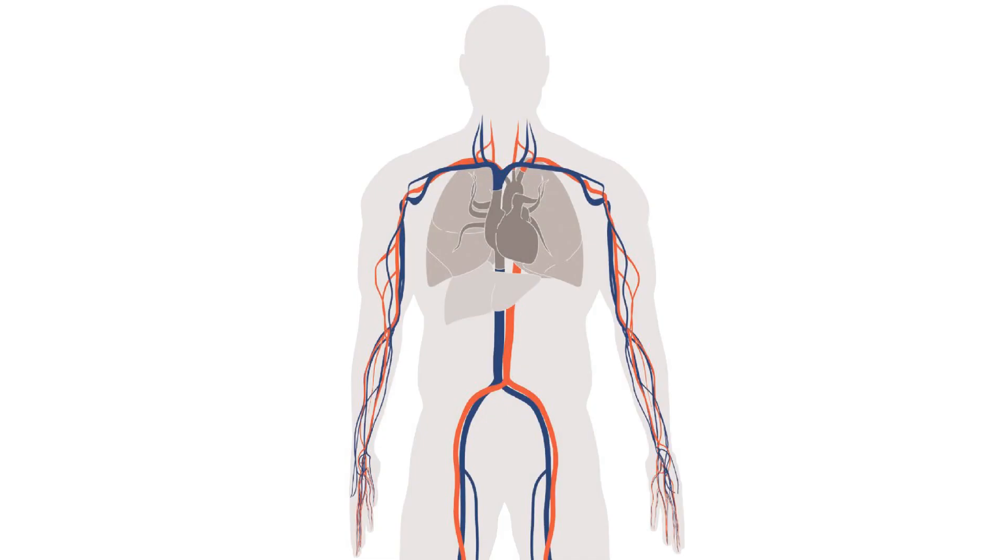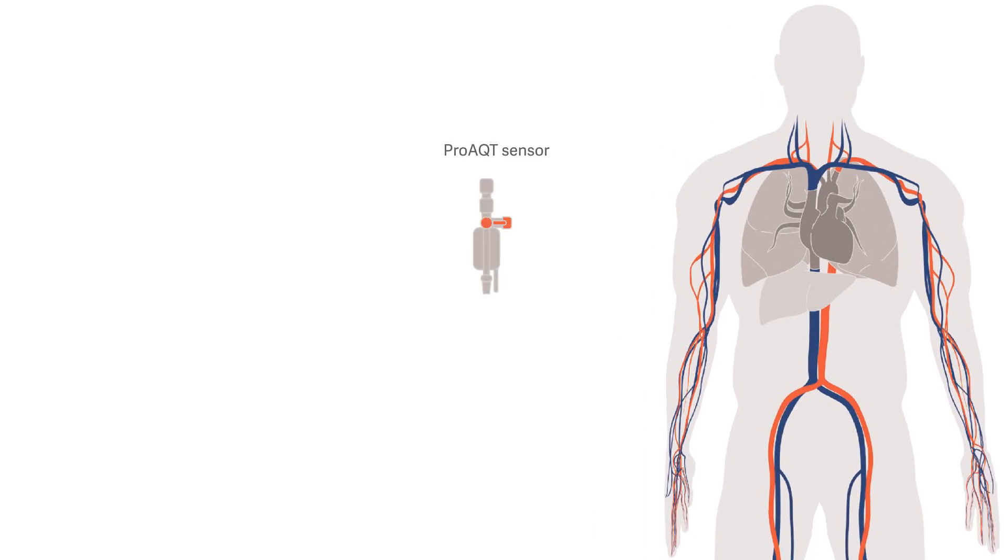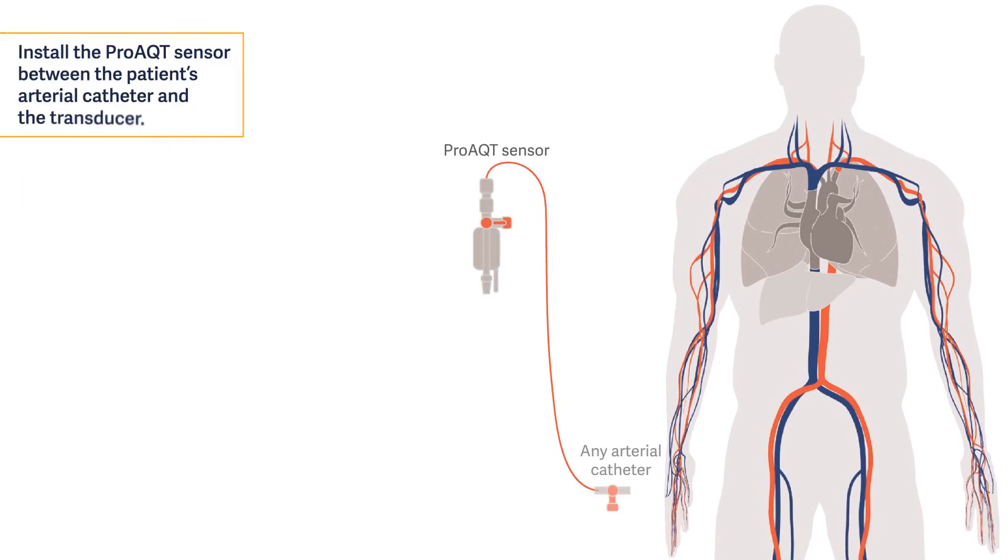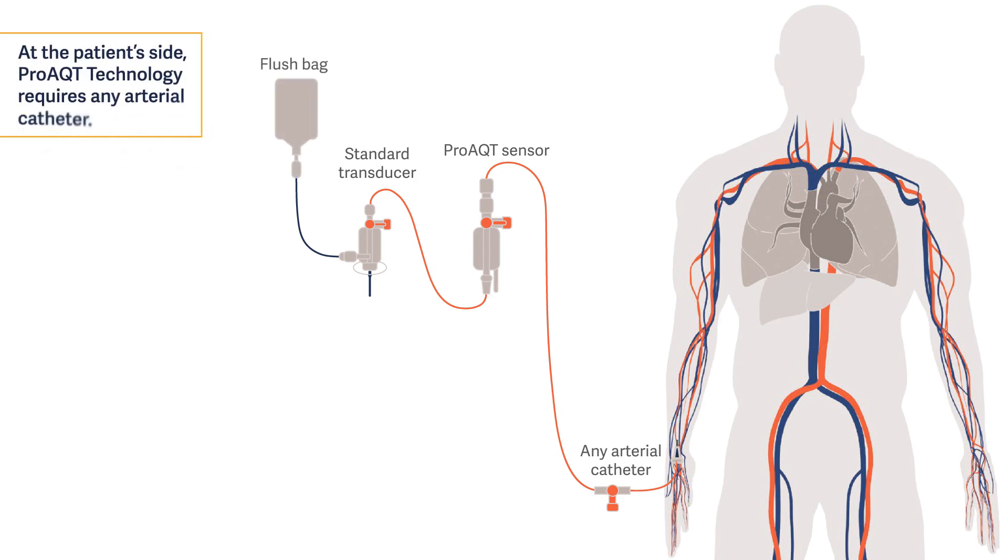To use PROACT technology, properly set up its equipment. To set up the PROACT sensor, install it between the arterial catheter and the transducer. It can be any arterial catheter. Prime the complete system. Connect the PROACT sensor to the monitor.